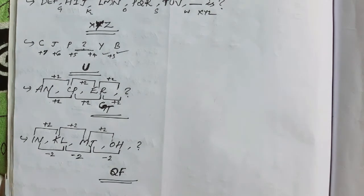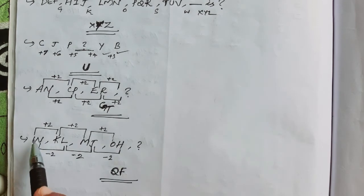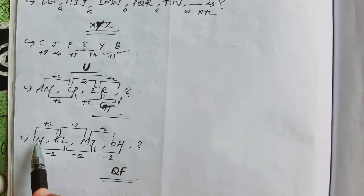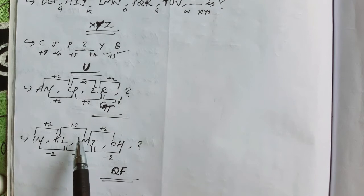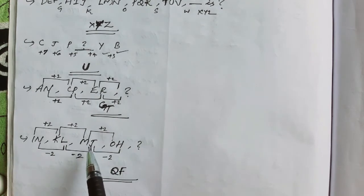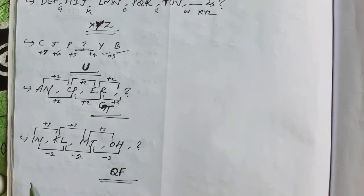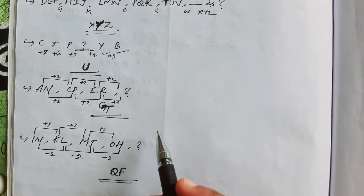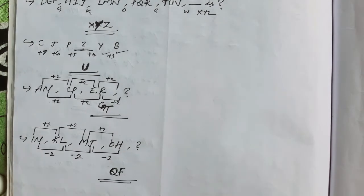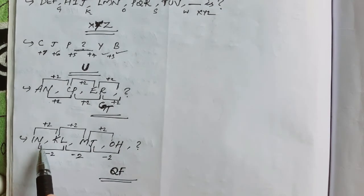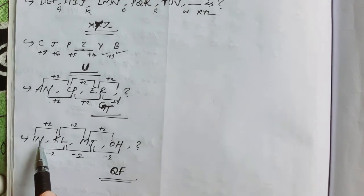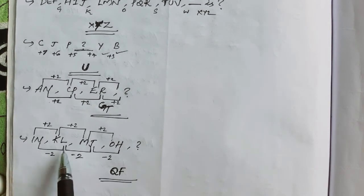The series is: IJK, LM, JOH. Here we have the same pattern. The first term: IJK plus 2 gives KLM — that is plus 2. Then MO is plus 2. Next plus 2 is O plus 2, giving PQ. Q is the first letter, and this is the second letter.